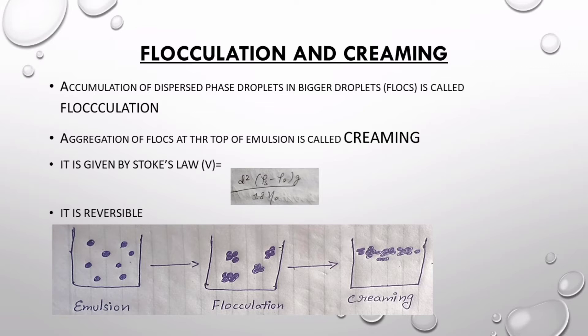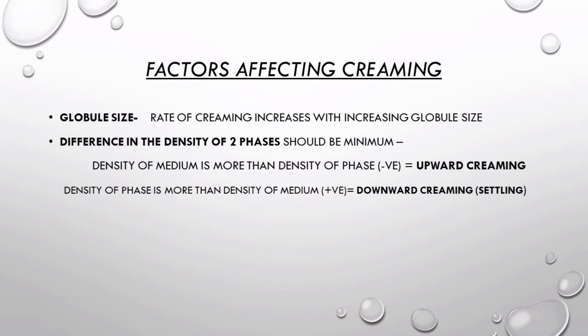Creaming is a reversible process and its rate is given by Stokes law, represented by v. According to Stokes law, rate of creaming is directly proportional to d² (globule diameter) and the difference between densities of dispersed phase and dispersion medium, represented as ρs minus ρ0, and g (acceleration due to gravity), divided by 18η0, where η0 is the viscosity of the dispersion medium.